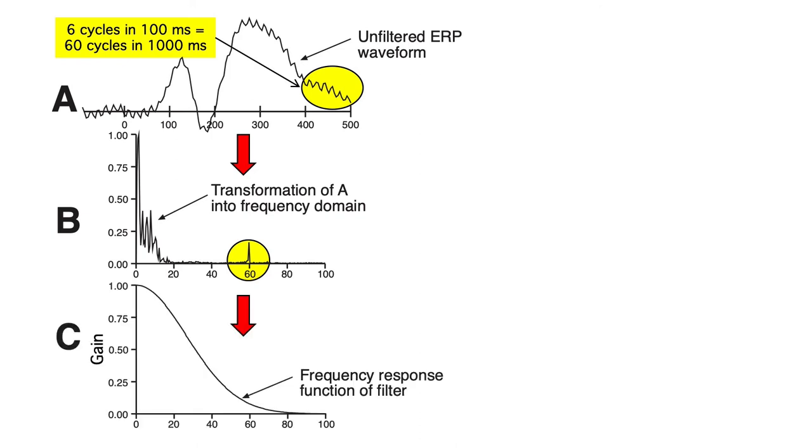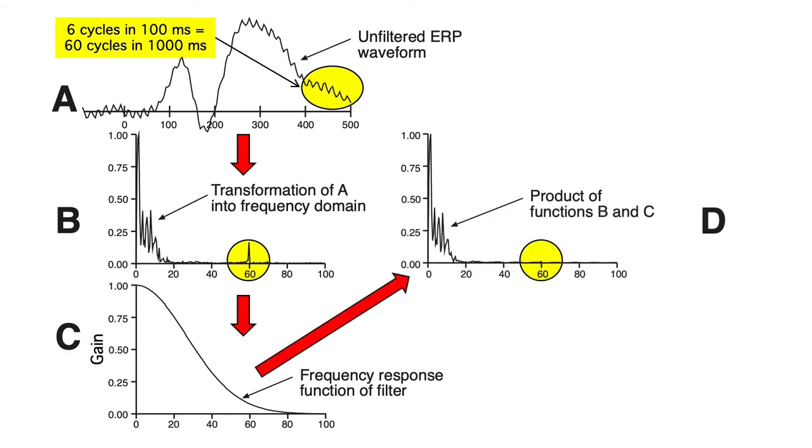The gain at a given frequency quantifies the amount that that frequency will pass. If the value is 0.9, then 0.9 of the activity will pass. So, we can just multiply each gain value in the frequency response function by the amplitude at the corresponding frequency in the Fourier transform of the ERP. This gives us the filtered data in the frequency domain.